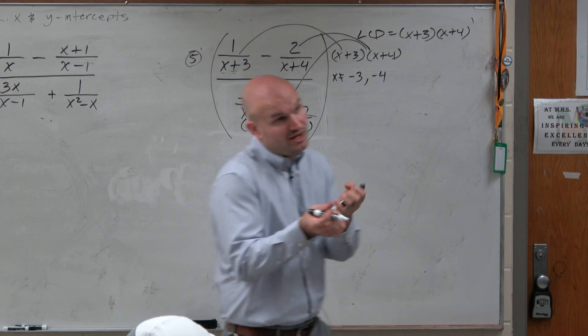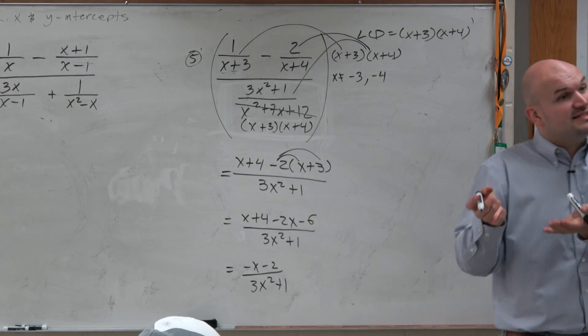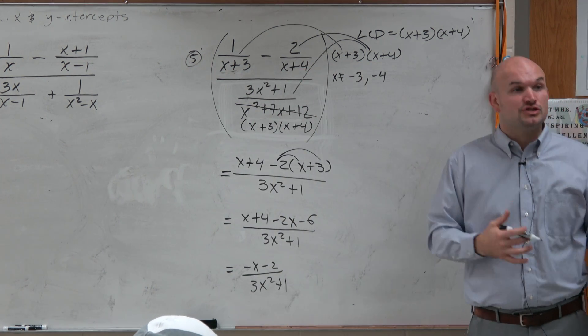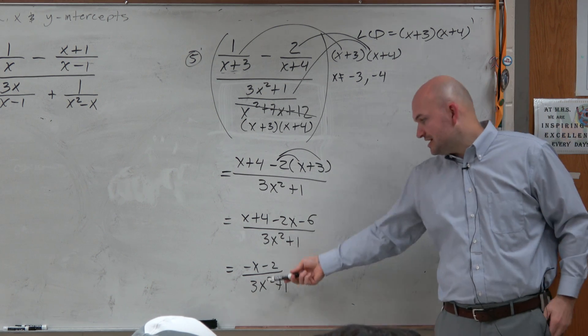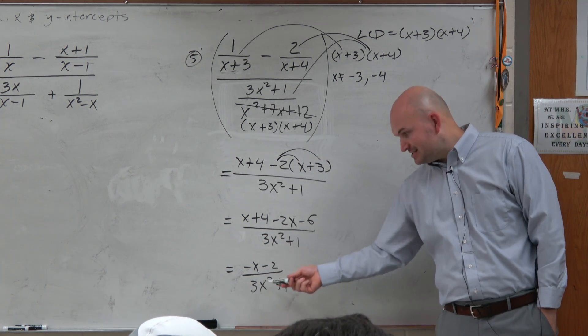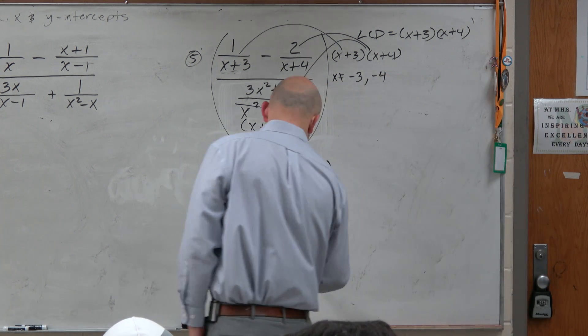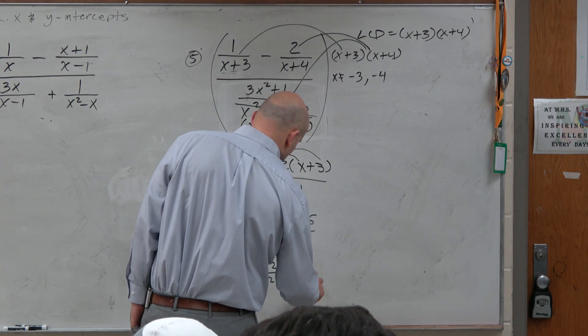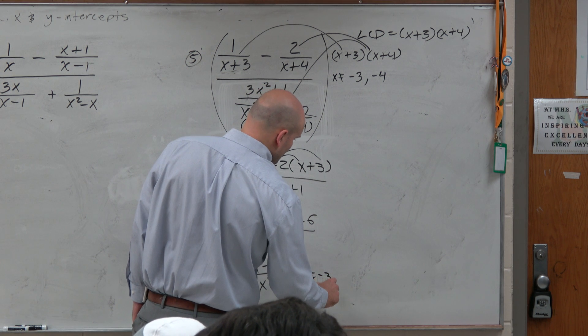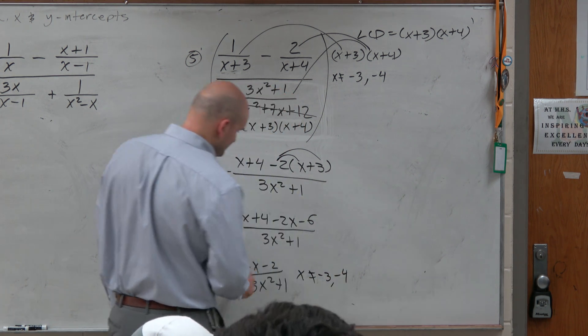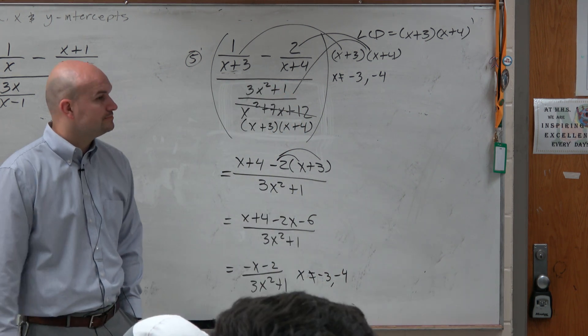Now, the only thing we want to do once we have simplified it is see if there's been any other constraints added. And as you can see, the only values that make this denominator 0 would be those imaginary numbers. So my final answer on my multiple choice test would be x cannot equal negative 3 and negative 4. And that'd be your simplified answer, OK?